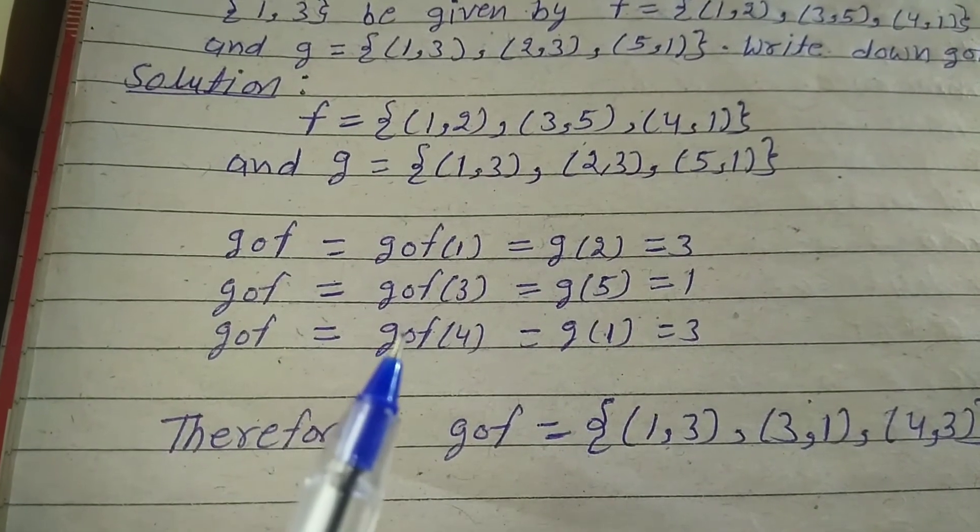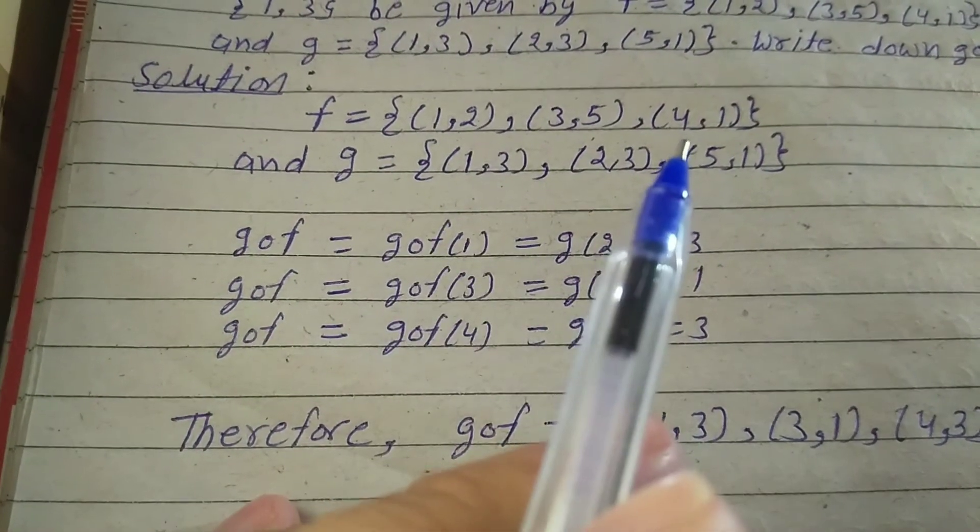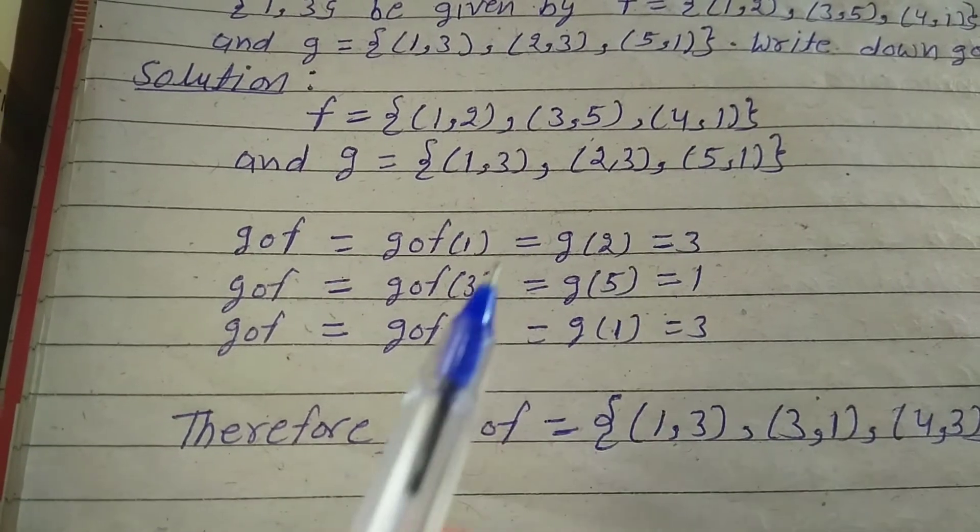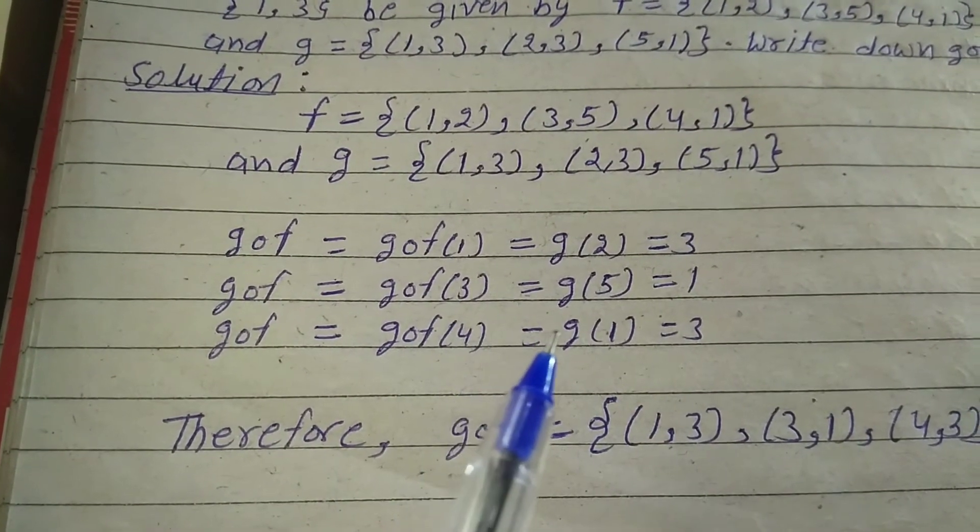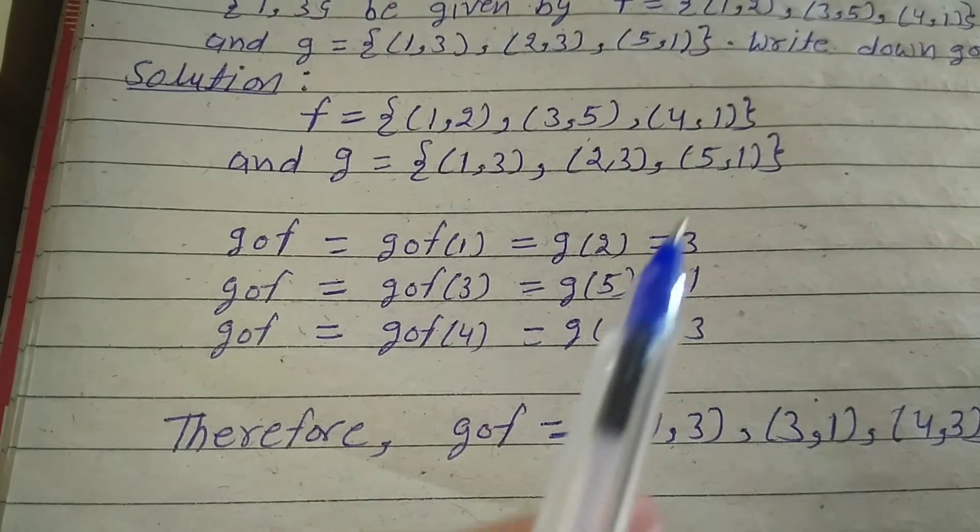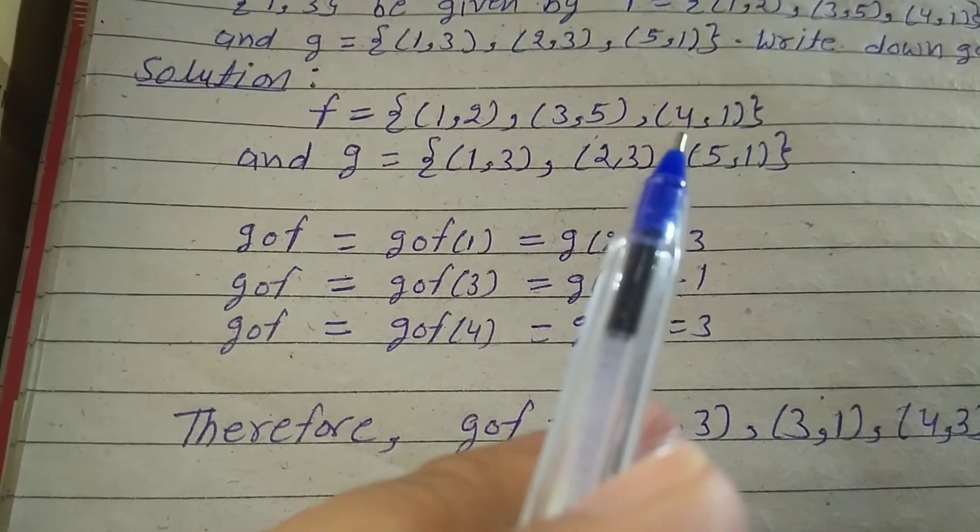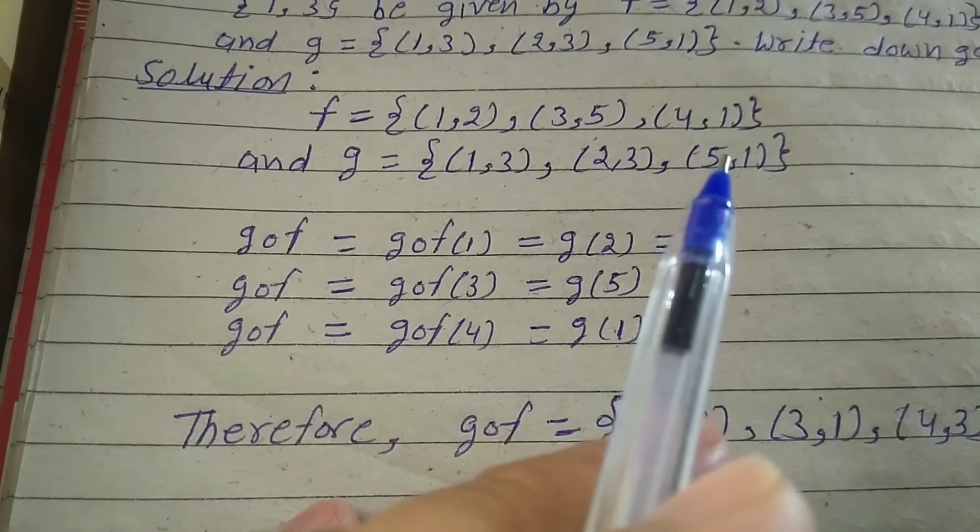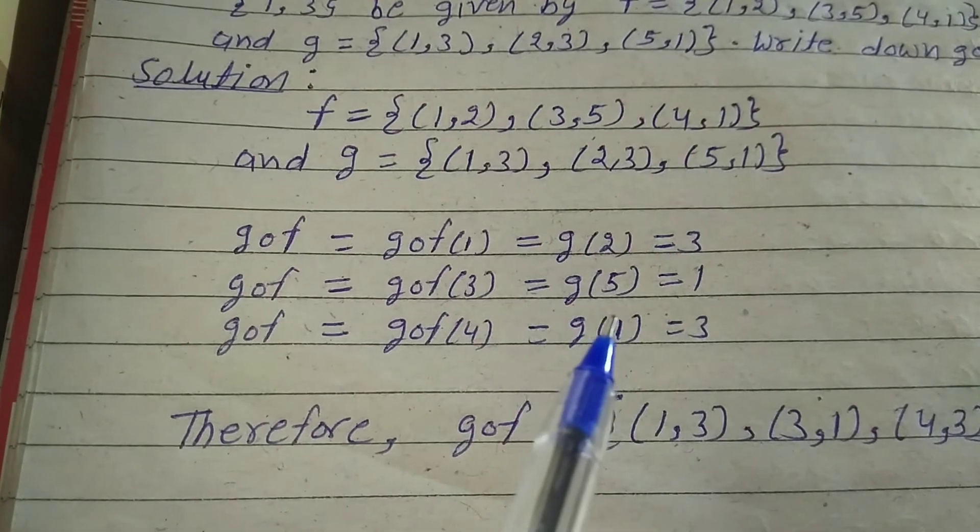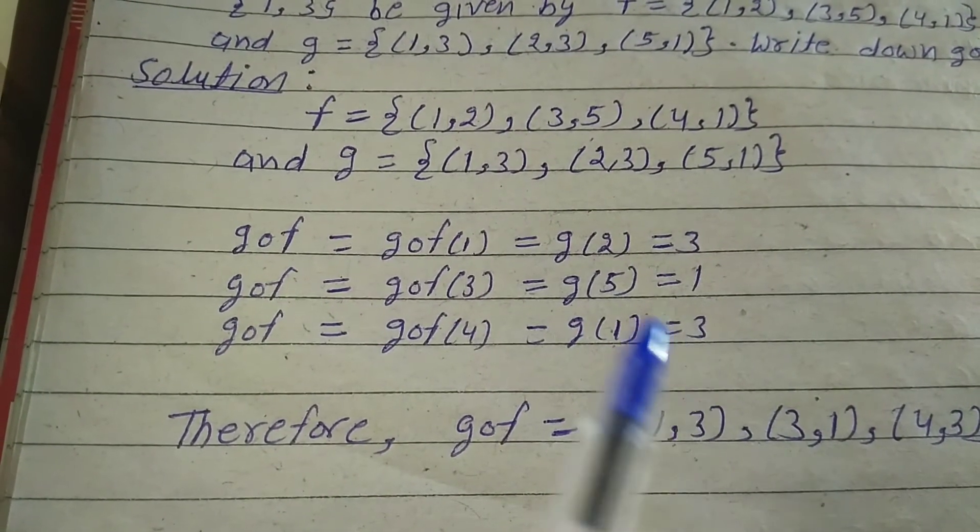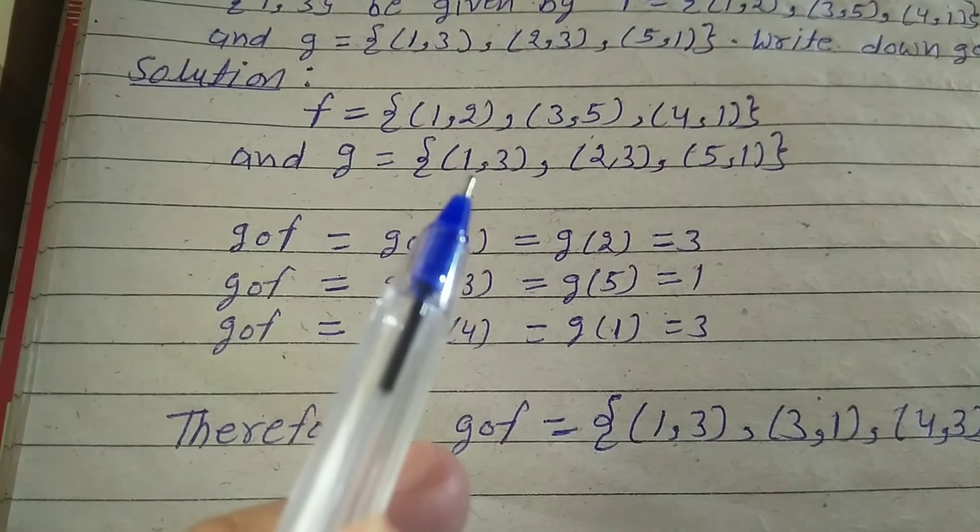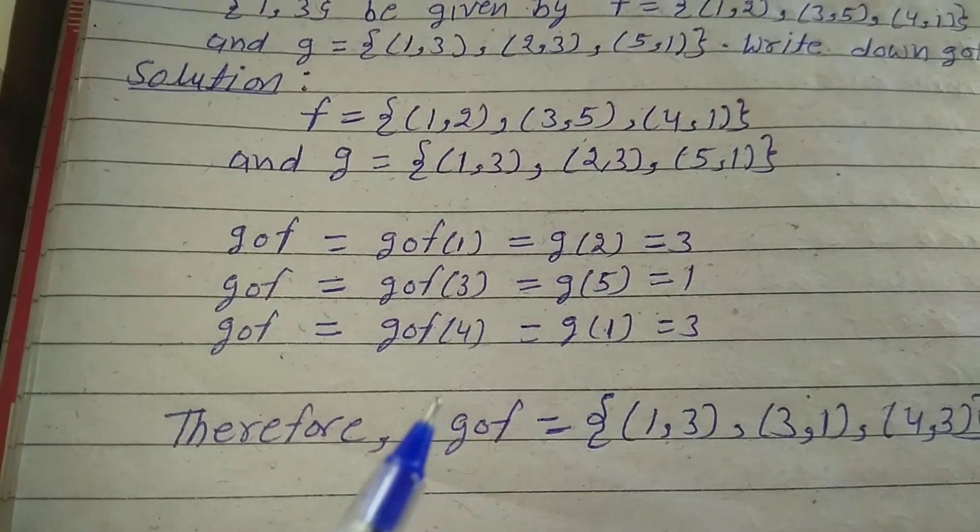GoF(4): so GoF(4) is equal to G(1), means F(4) value is 1, so G(1) is equal to 3.